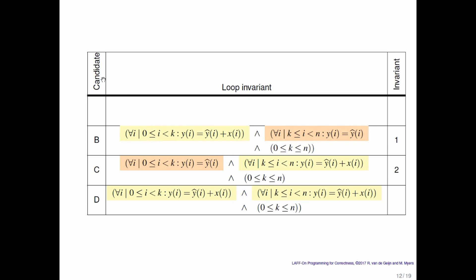And that then leaves us with two loop invariants from which we can actually derive a proper loop.